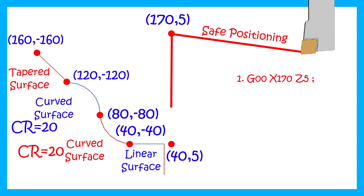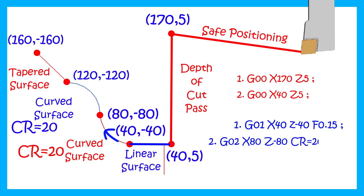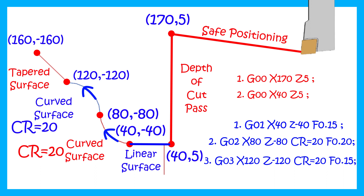After that, we will start machining the profile. Our first block will be G01 X40 Z-40 F0.15. The second block will be G02 X80 Z-80, CR equals to 20, F0.20. The third block will be G03 X120 Z-120, CR equals to 20, F0.15. And the final machining block will be G01 X160 Z-160 F0.10.